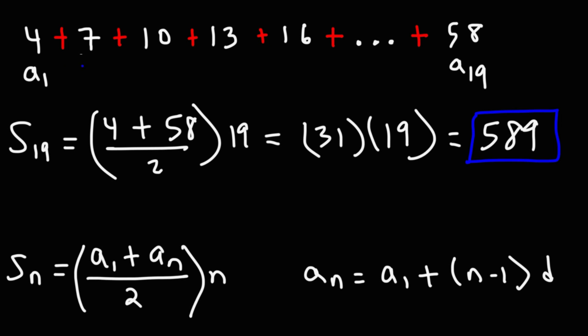So if you were to write out all the numbers from 4 to 58, going up by 3, and if you add those numbers, you should get this answer, 589.